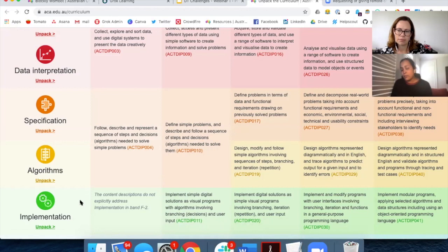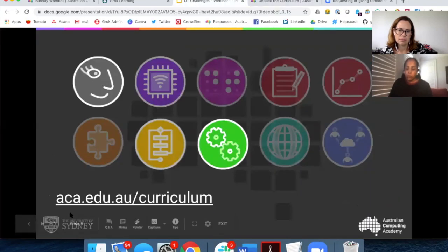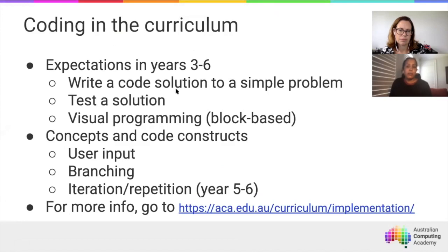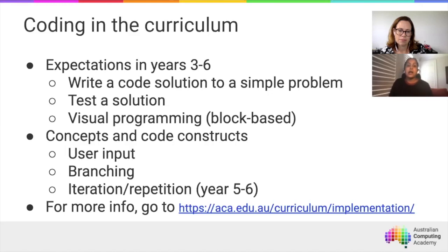Coding is in one way one-tenth of the digital technologies curriculum, but it's often a little more than that because it's closely tied to other key concepts like algorithms, where students need to model a solution before they start programming. In years 3 to 6, students are expected to write a code-based solution to a simple problem, test it using a variety of methods, and use a visual programming or block-based language. The concepts they need to learn include accepting user input, handling decisions, and making a block of code repeat itself so you're not rewriting the same code hundreds of times.